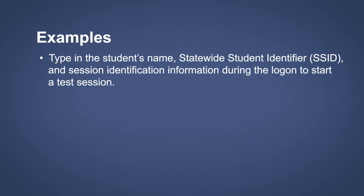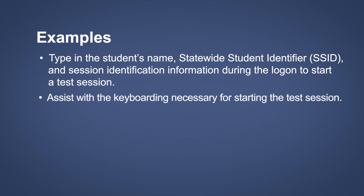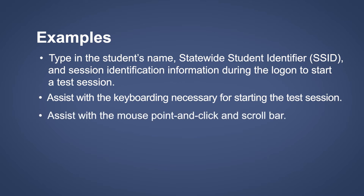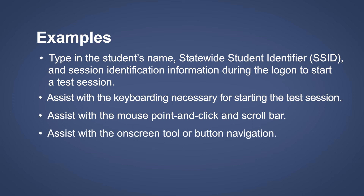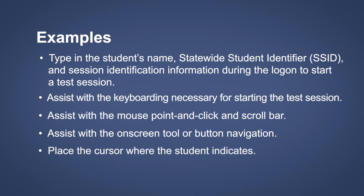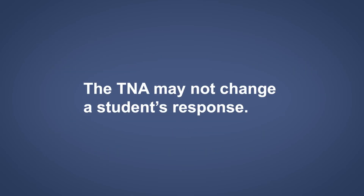Here are some examples of what the test examiner acting as a TNA may do: type in the student's name, Statewide Student Identifier or SSID, and session identification information during logon to start a test session; assist with any keyboarding necessary for starting the test session; assist with the mouse point, click, and scroll bar; assist with on-screen tool or button navigation, including the back and next buttons, starting and stopping the listening stimulus, or submitting a test; and place the cursor where the student indicates. Remember, the TNA is only allowed to assist with the technology and may not change a student's response. The only time the TNA may type on a student's keyboard is during logon and when starting a test session. The TNA may not type in a student's response for the writing domain.